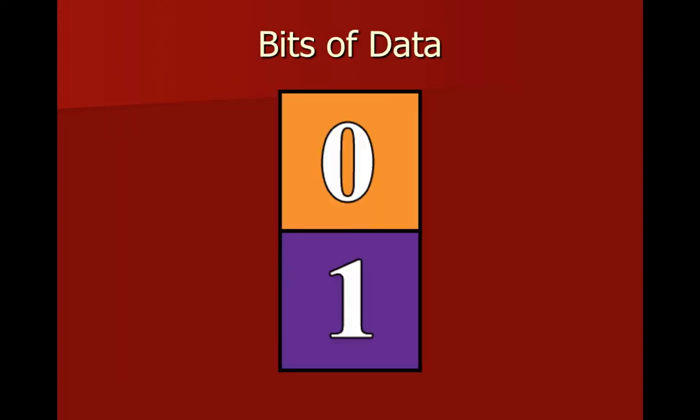Since we know that computers are made up of ones and zeros, if I give one bit of data for a graphic, that means I can map two colors to that one bit of information. So my zero could be mapped to the color orange for the Orioles, or the color purple for the Ravens. But I'm limited to two colors — any two colors: black and white, red, blue, you name it.